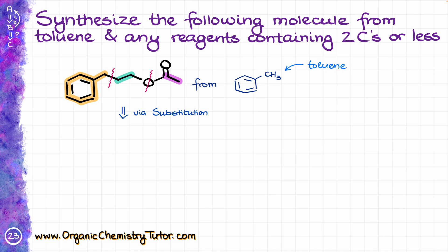I can make this ester via a substitution reaction, which means that my reagents are going to be a corresponding alkyl halide — like a primary bromide — and an acetate nucleophile. If I bring those two pieces together, I'm going to have a simple SN2 reaction that will afford me my final product.